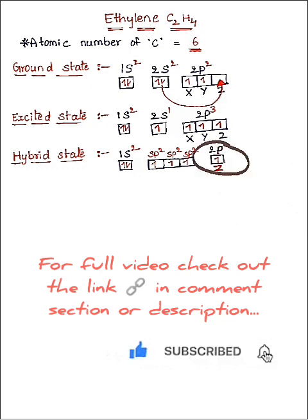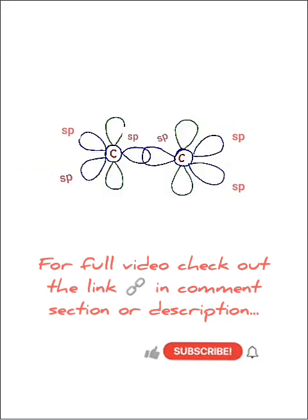And this z orbital is unhybridized orbital. So firstly, both the carbon atoms will form chemical bonds by sharing the unpaired electrons in these sp2 orbitals. Between the two pz orbitals, unpaired electrons will be shared like this.